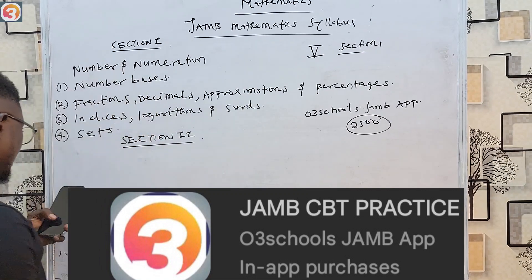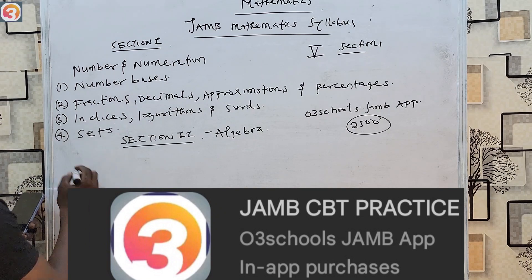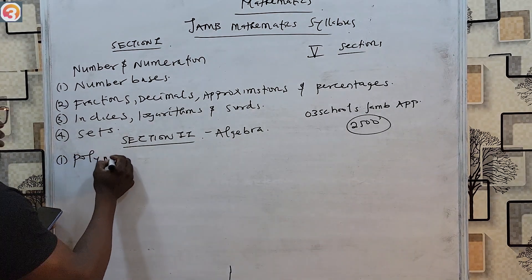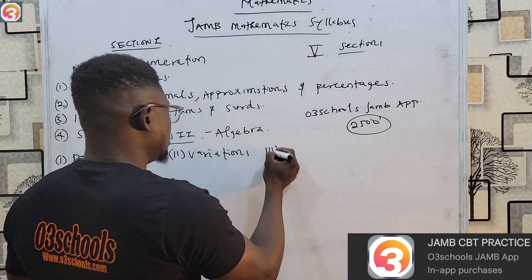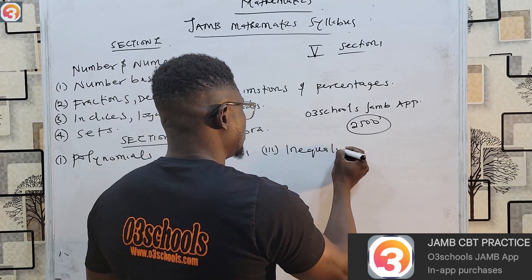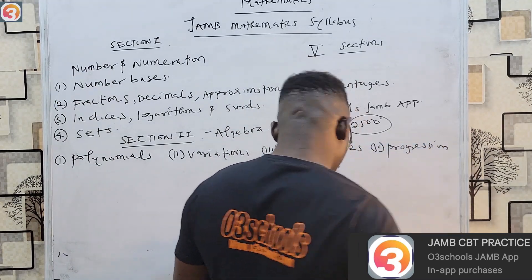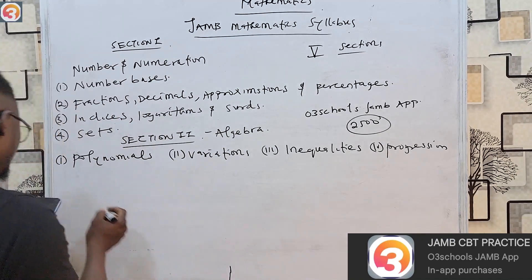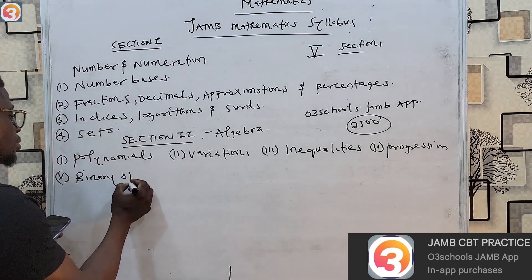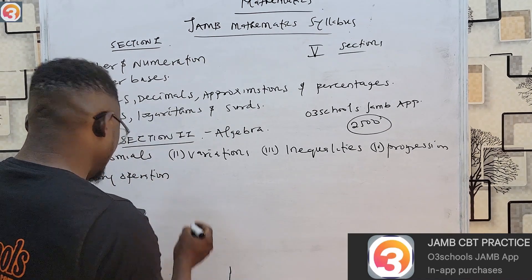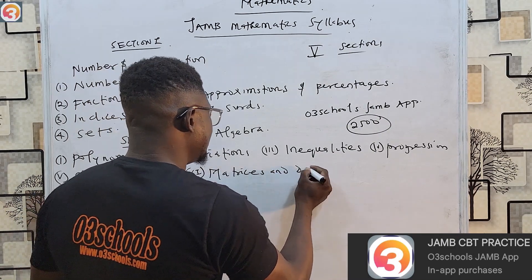Section two is Algebra. Under Algebra, the first topic is Polynomials, the second topic is Variations, the third topic is Inequalities, the fourth topic is Progression — covering AP and GP, the fifth topic is Binary Operations, and the sixth topic is Matrices and Determinants.